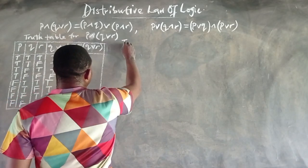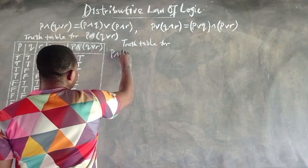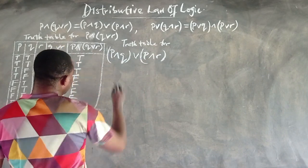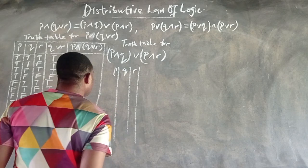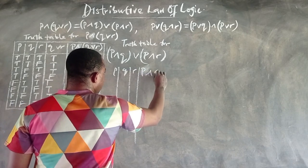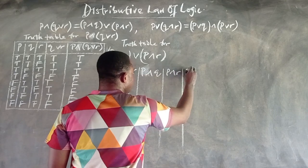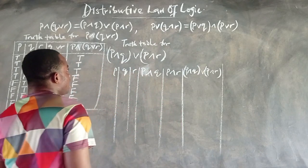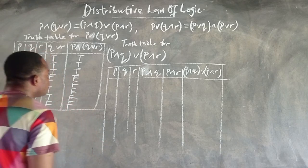Let's go on and draw the truth table for the next statement P∧Q ∨ P∧R, and see if we obtain the same results. It is very important to write the title for the table before drawing it. On the table we need P, Q, R, P∧Q, P∧R, and then the final compound statement.